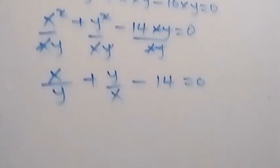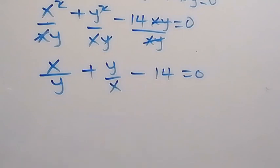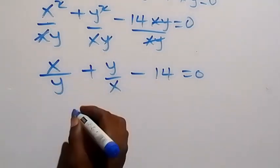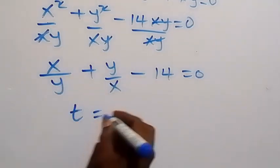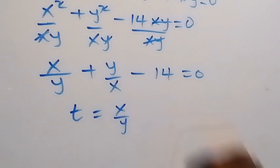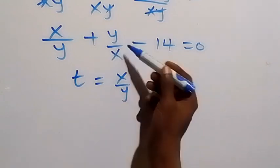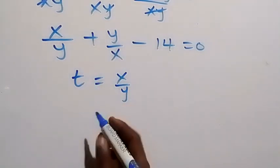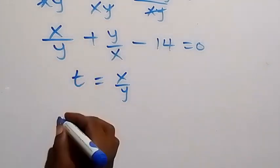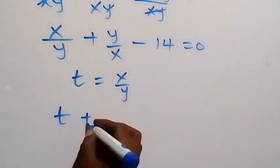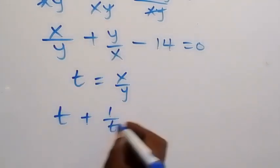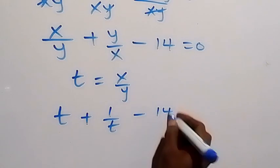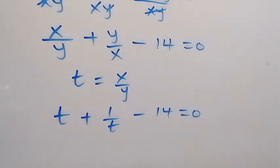Then let's use a variable here to represent x over y. So let t equals x over y. Then we can write the equation, since this is y over x, so this will be inverse of t, that's 1 over t. So this is t plus 1 over t, then minus 14 equals 0.